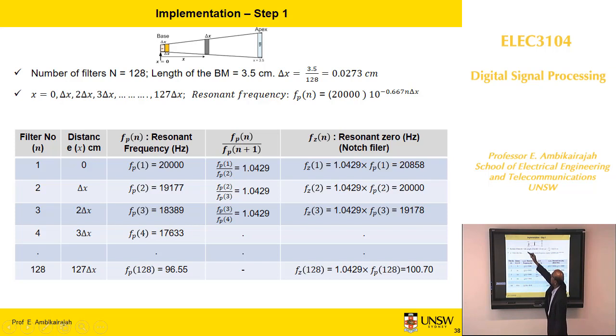First thing that you need to do is that you have got n number of filters, vessel membrane length is 3.5 centimeter, a small section is a square centimeter. And you need to then have first one 0x delta x, 2 delta, 3 delta, 127 delta x. You can calculate the resonance frequency using this equation. You will get the resonance frequency.